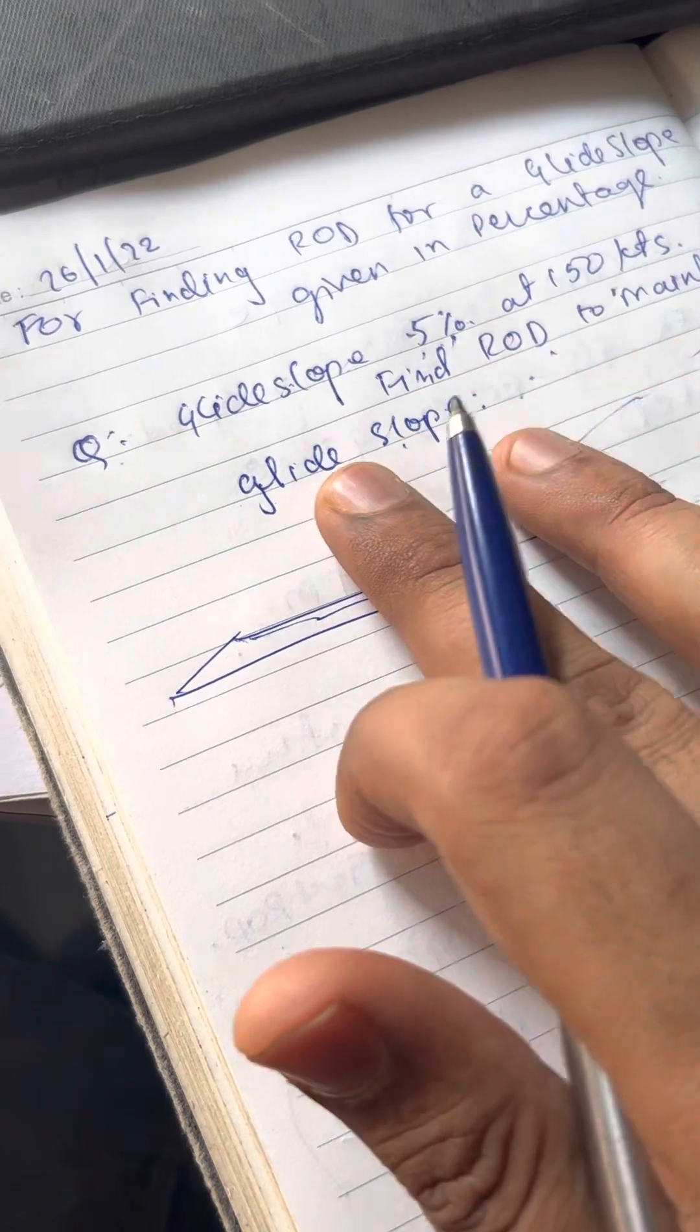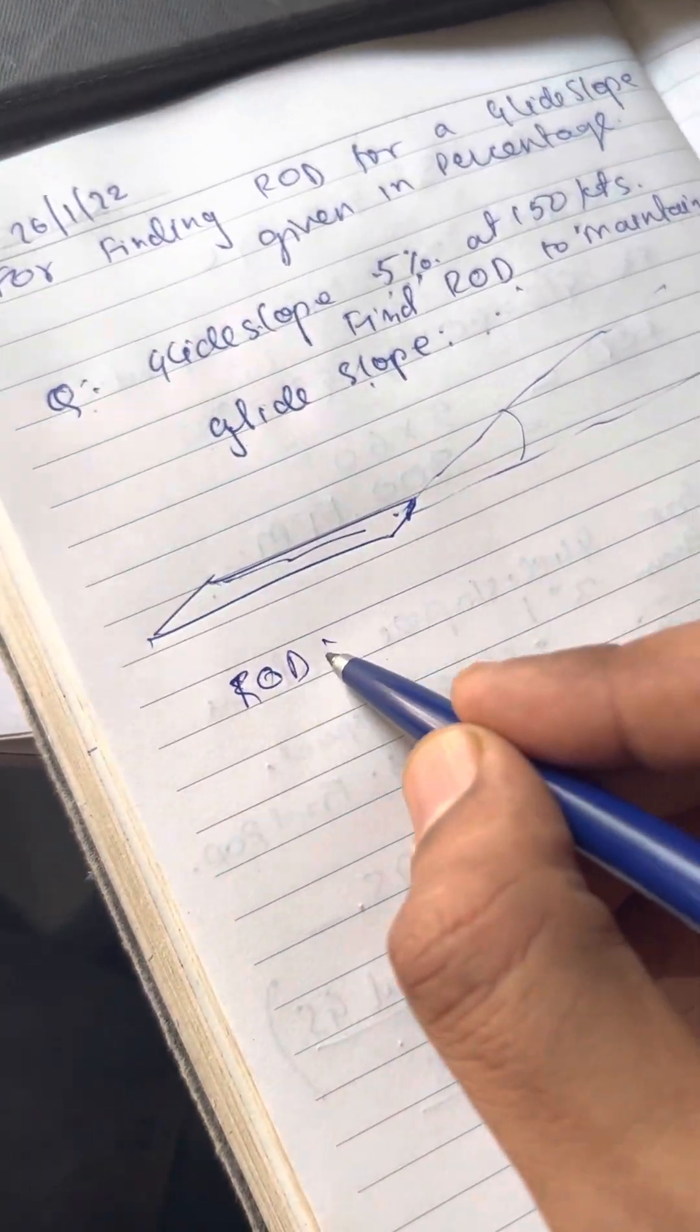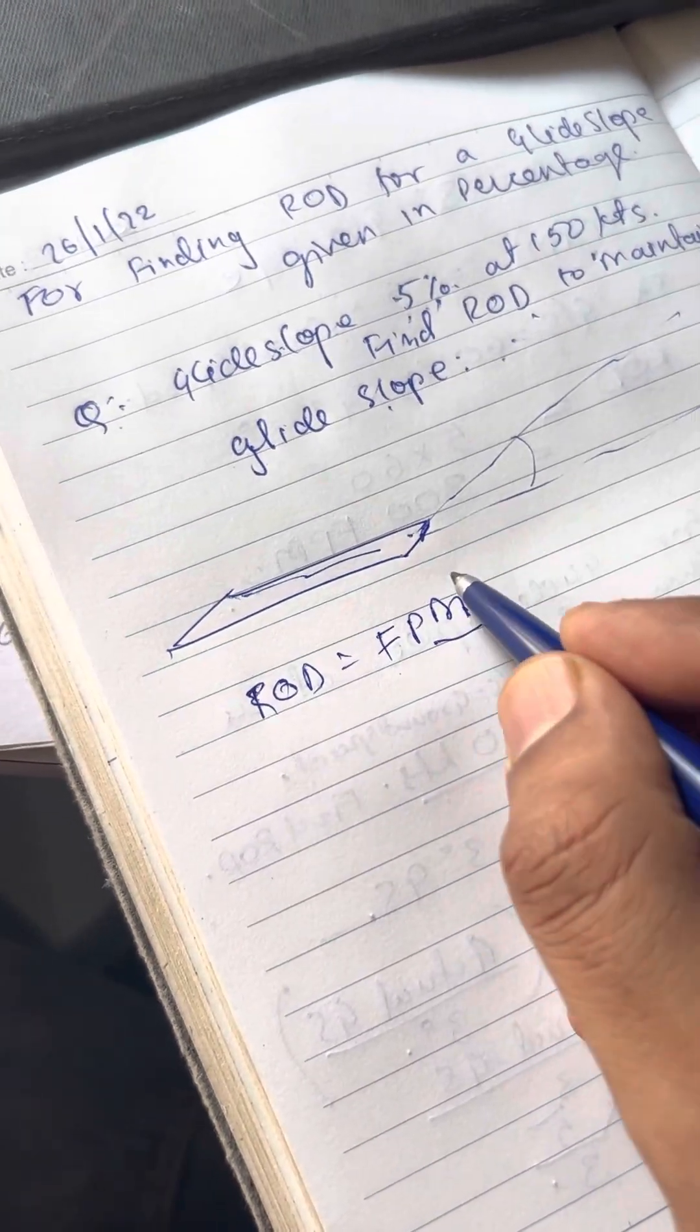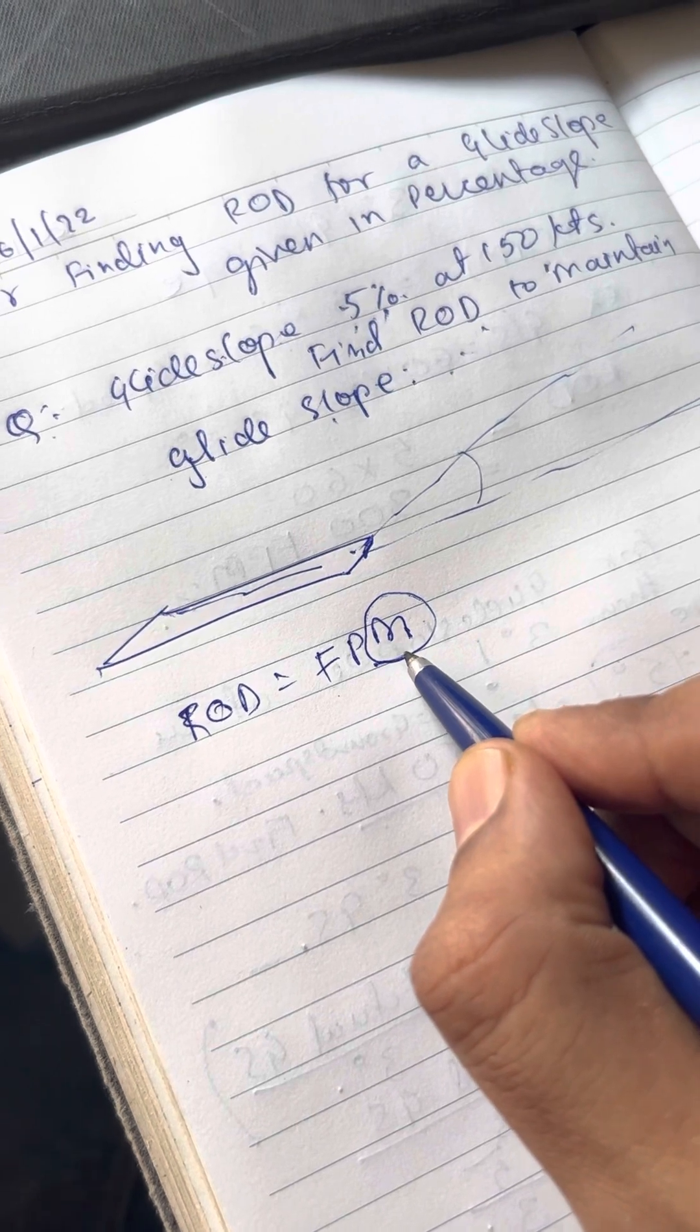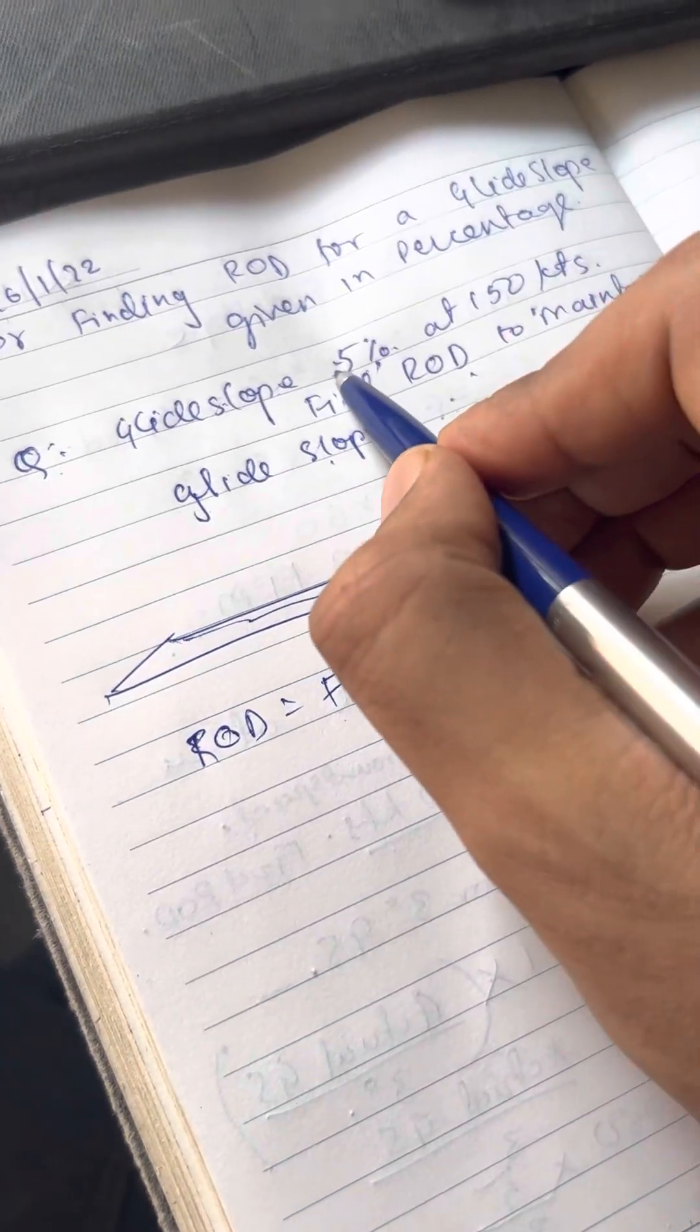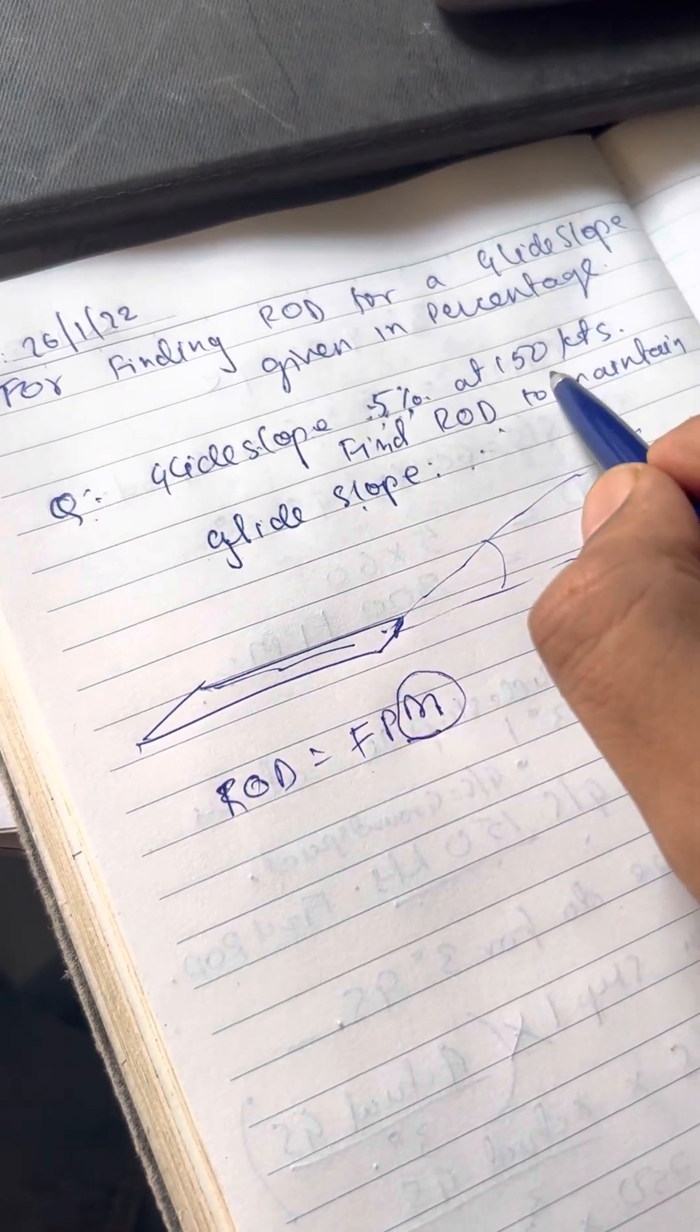Now remember, your ROD is always calculated in a unit. ROD is always in feet per minute. So here we will need the minute factor for us to be determined. So the technique is very simple. First, whatever percent glide slope is given, find that percent value of your ground speed.